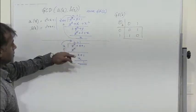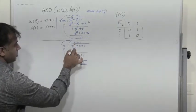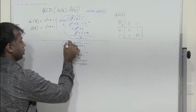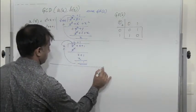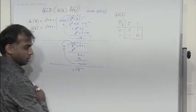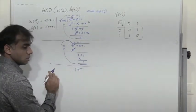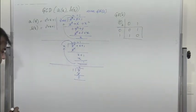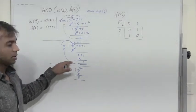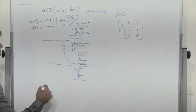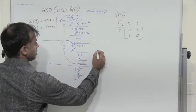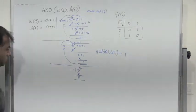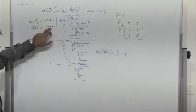Replace the current A of x with B of x and B of x with the remainder. So A of x becomes x and the new B of x is 1. Then x into 1 gives x, x cancels, and the remainder is 0. Since the remainder is 0, the previous remainder is the GCD. Therefore, GCD of x³ + x + 1 and x² + x + 1 is 1.